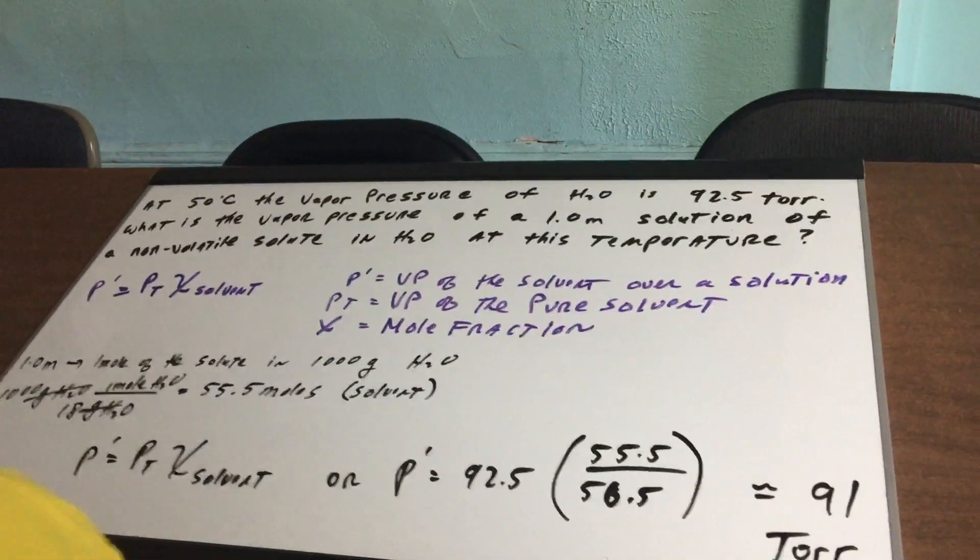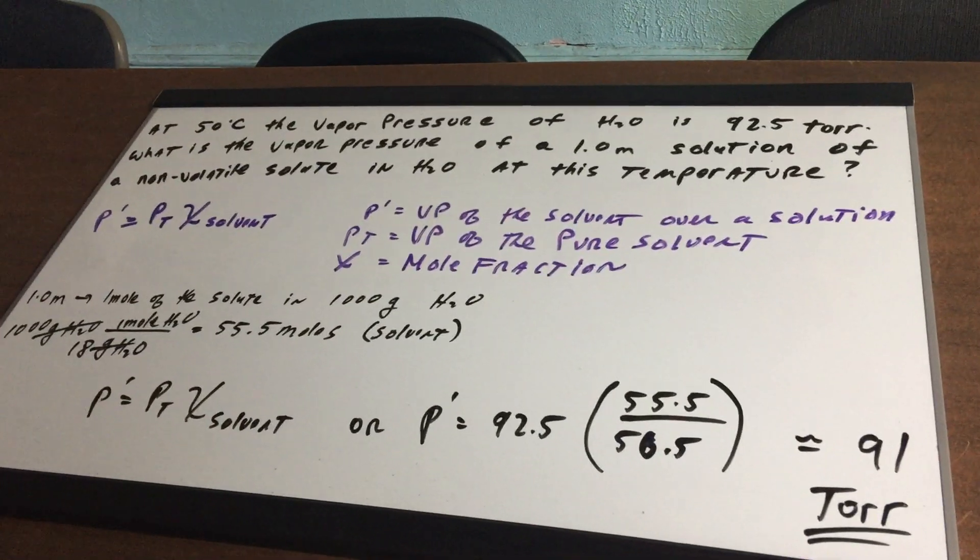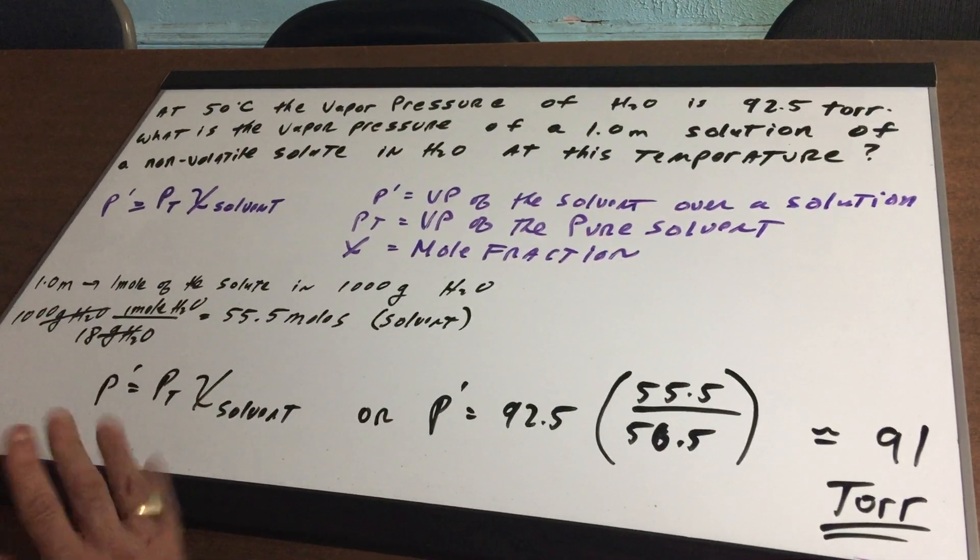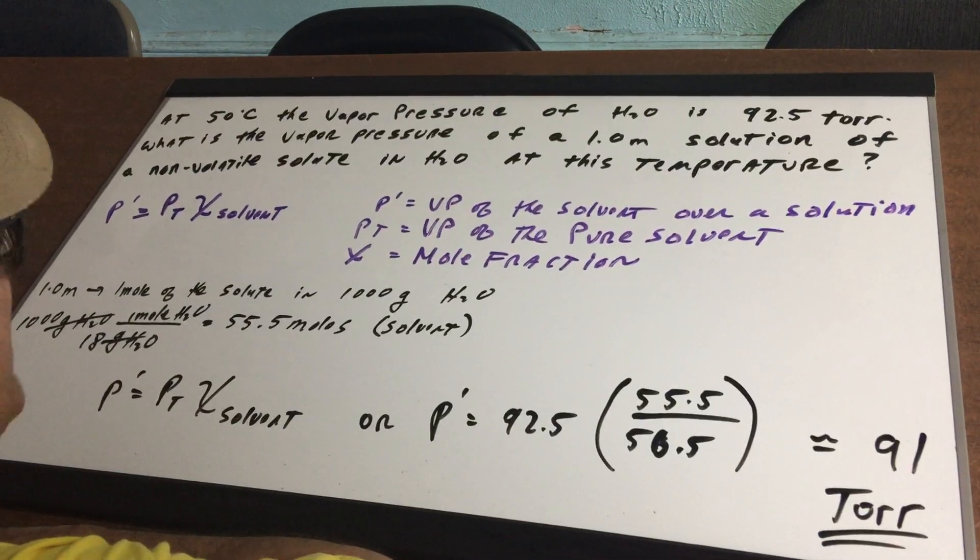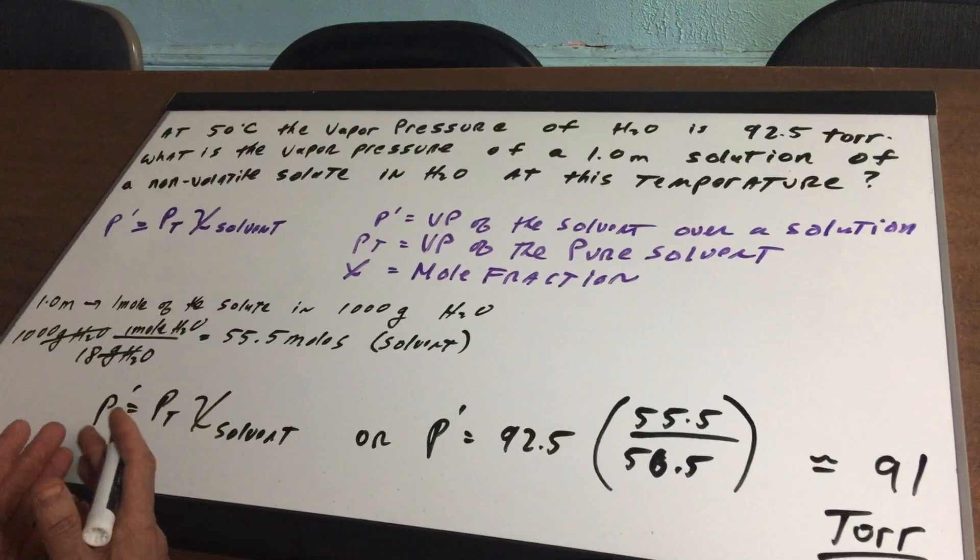I say to you at 50 degrees Celsius the vapor pressure of water is given as 92.5 torr. Now, before we go on any further,